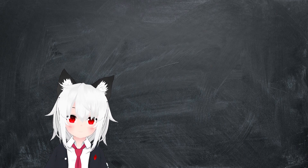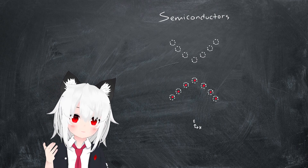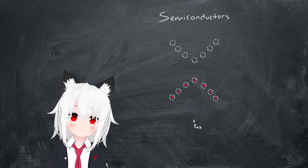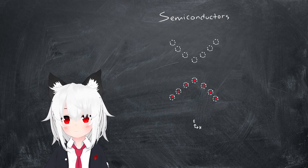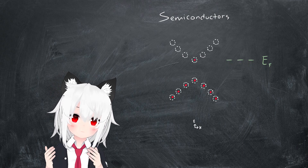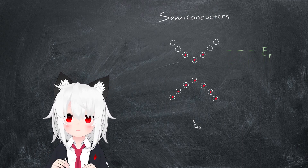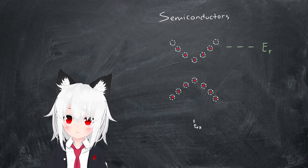For this reason, materials with a moderately sized band gap are often referred to as semiconductors, since they can either be insulating or conducting depending on the number of electrons present in the system.